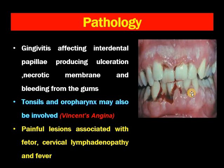This condition may involve all the interdental papillae in the gums. When the tonsils and oropharynx are involved, this is called Vincent's Angina — meaning inflammation of the oropharynx and oral cavity. These painful lesions may be associated with fetor, cervical lymphadenopathy, and fever due to infection of the oral cavity and oropharynx. The fetor is due to infection by anaerobic organisms, and the patient is unable to swallow properly.